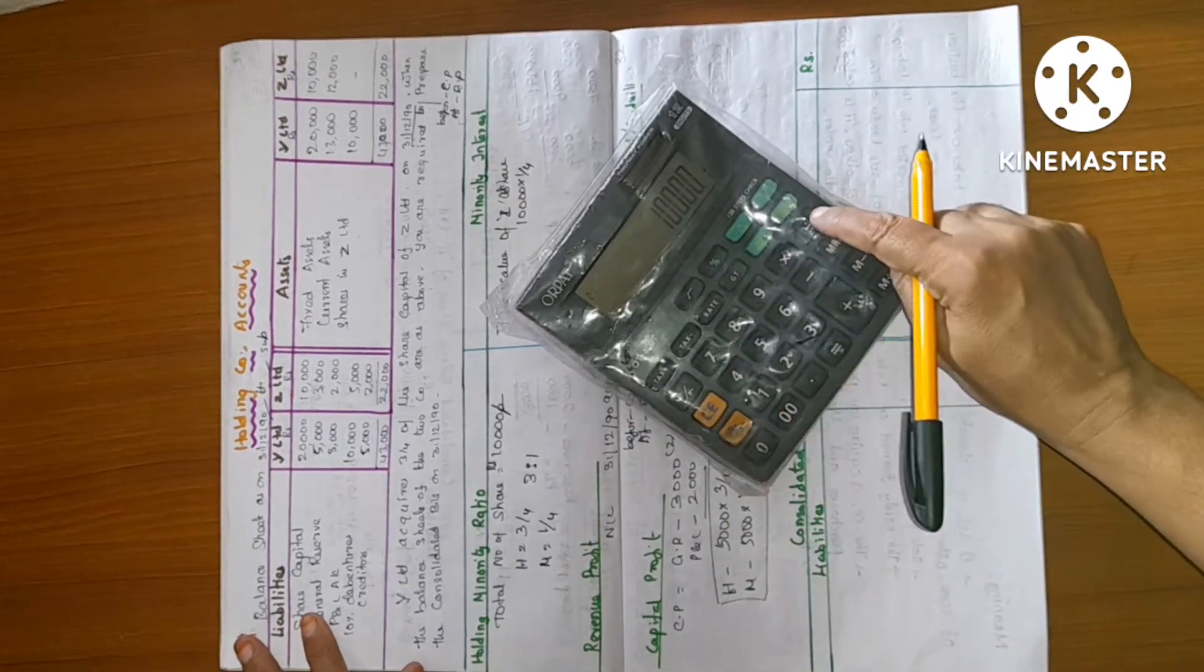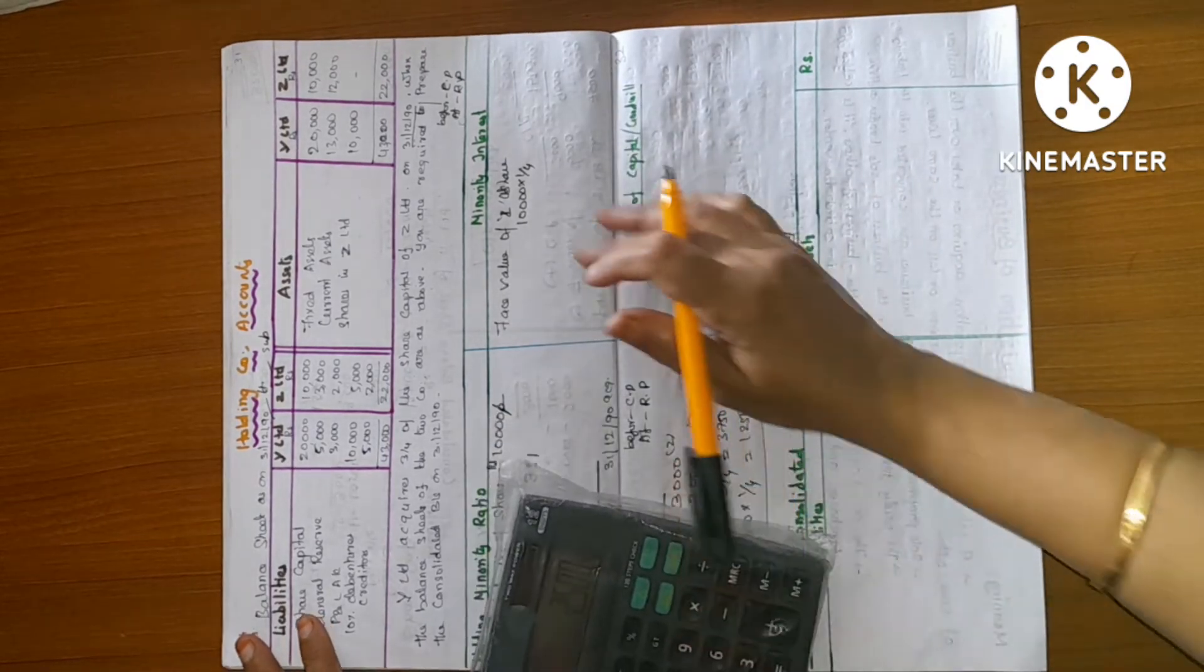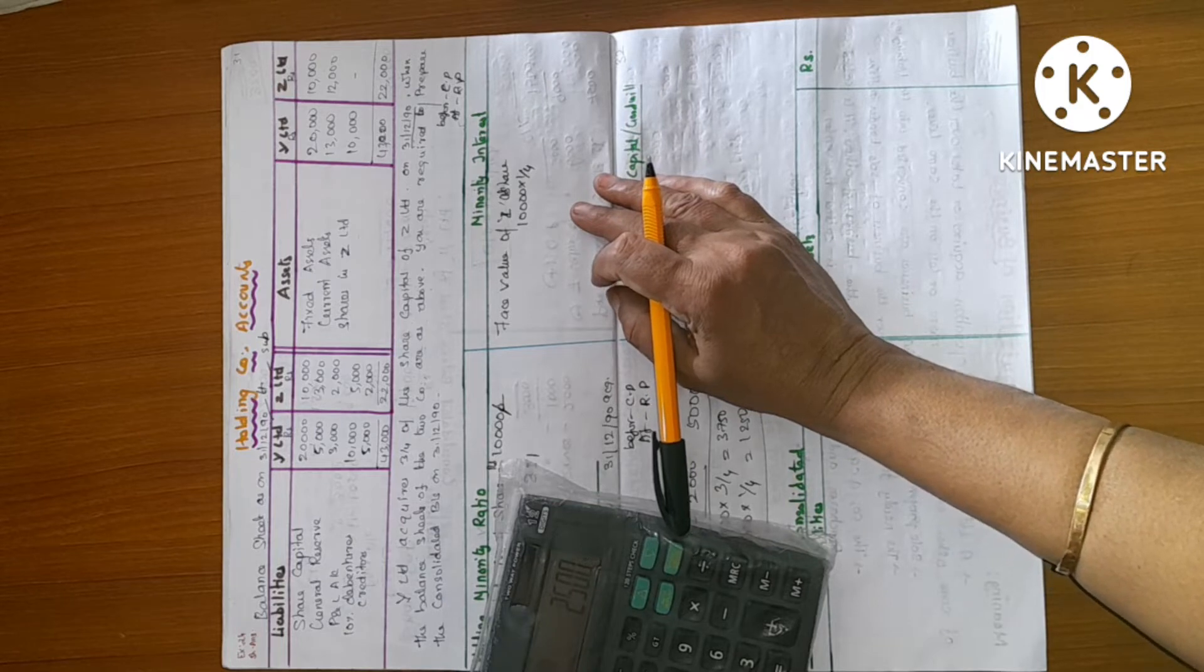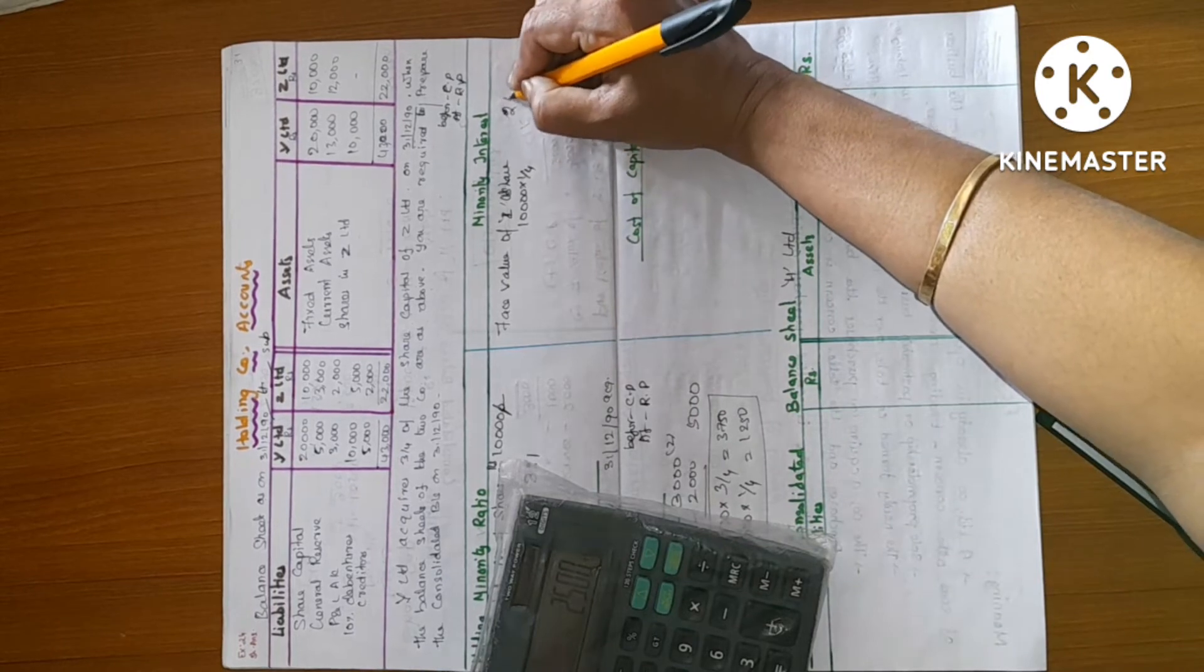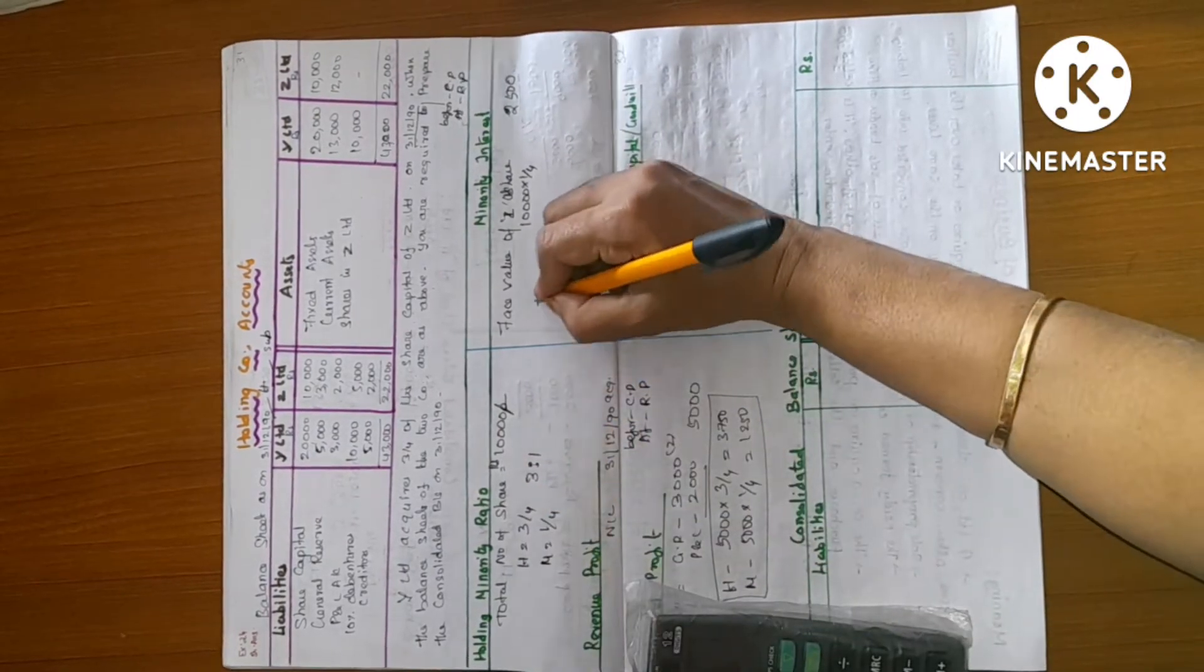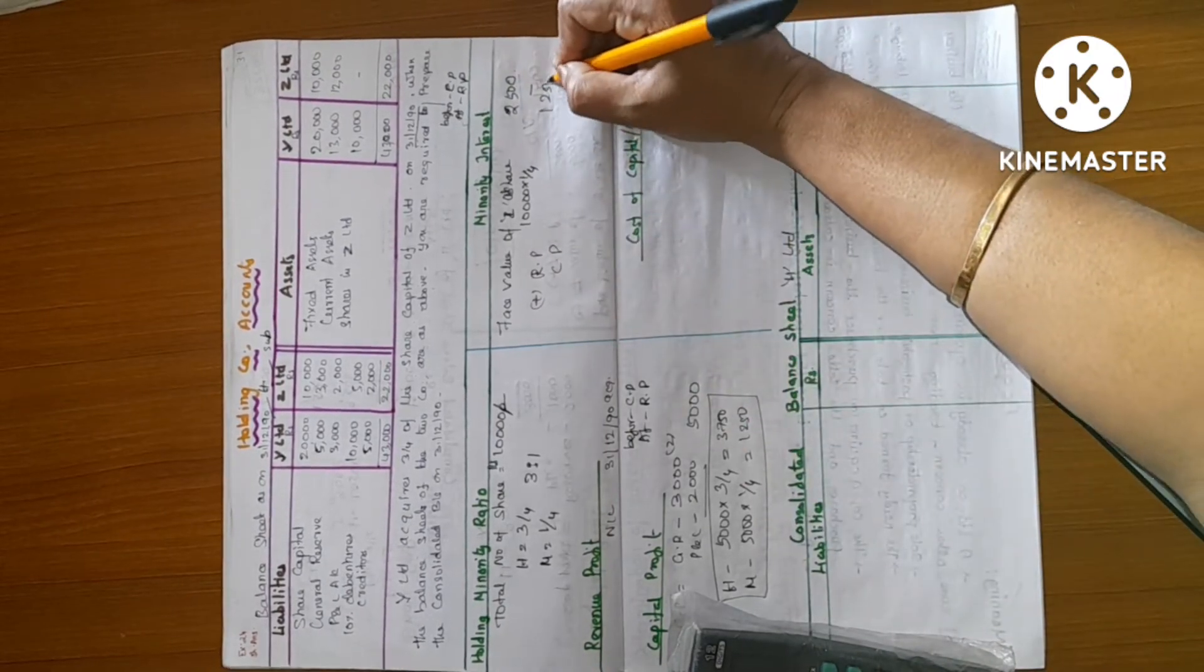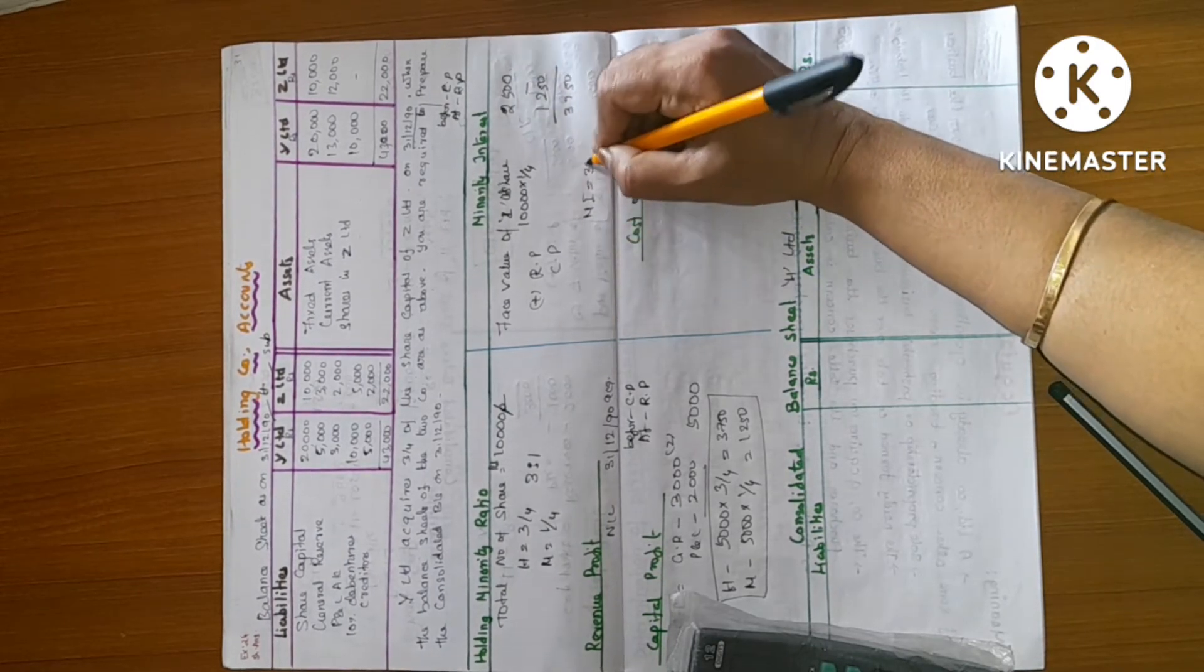Per share price. 2,500. Revenue profit, no one. Capital profit 1,250. 3,750. Minority interest 3,750.